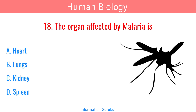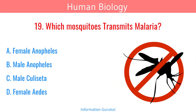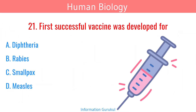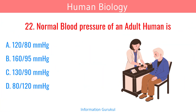The organ affected by malaria is the spleen. Which mosquito transmits malaria? Female Anopheles. Full form of AIDS is Acquired Immune Deficiency Syndrome. First successful vaccine was developed for smallpox. Normal blood pressure of an adult human is 120 by 80.